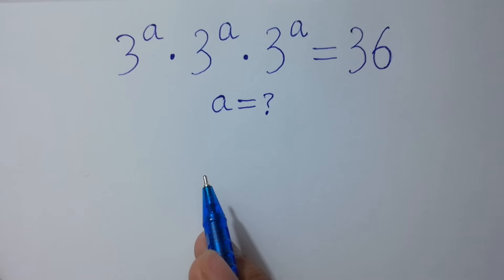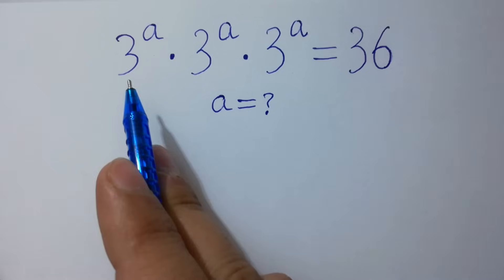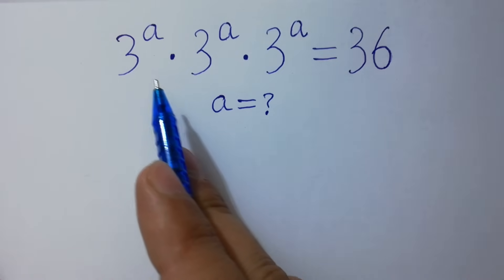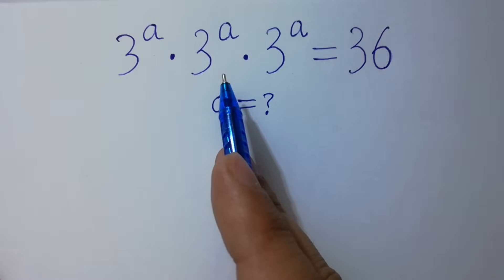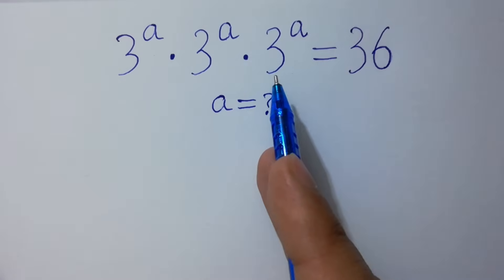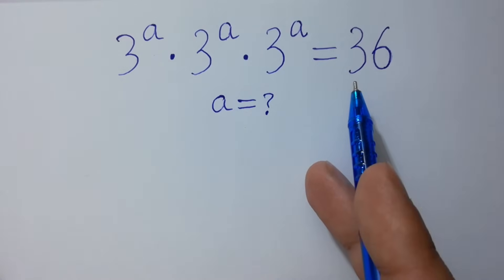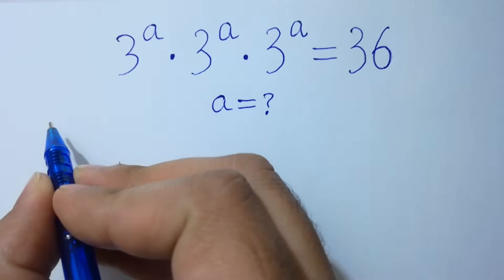Hello friends, find the value of a if 3 to the power a times 3 to the power a times 3 to the power a equals 36. Let's have a solution.